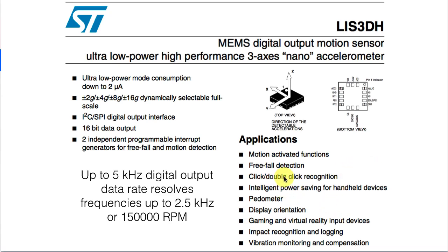We can also measure taps on the device by detecting the acceleration when you tap your fingers on it. There are a whole lot of capabilities we can get out of these accelerometers, including orientation simply by measuring which direction is gravity, or a bunch of input devices for virtual reality and gaming. The applications are enormous, including simple, old-fashioned vibration monitoring for mechanical equipment — where we want to detect if something's vibrating, how much it's vibrating, and be able to do some diagnostics on the equipment from that.